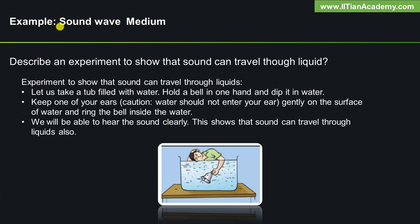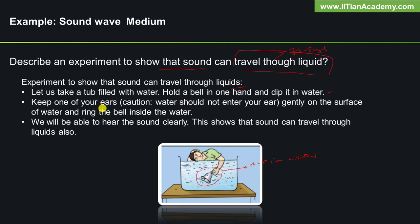Here we will see an experiment to show that sound can travel through a liquid medium. Let us take a tub filled with water, hold a bell in one hand, and dip it in water. Keep one of your ears gently on the surface of water and ring the bell inside the water. We will be able to hear the sound clearly. This shows that sound can travel through liquids also.